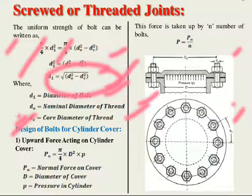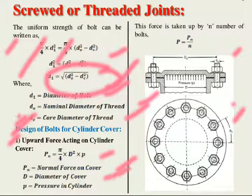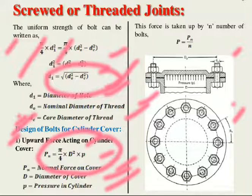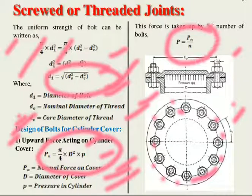Now for the design, the upward force acting on a cylindrical cover is given by the formula: Pn = π/4 × D² × p, where D is the cylinder diameter and p is the internal pressure. This total upward force is taken by n number of bolts, so the force per bolt is Pn divided by n.